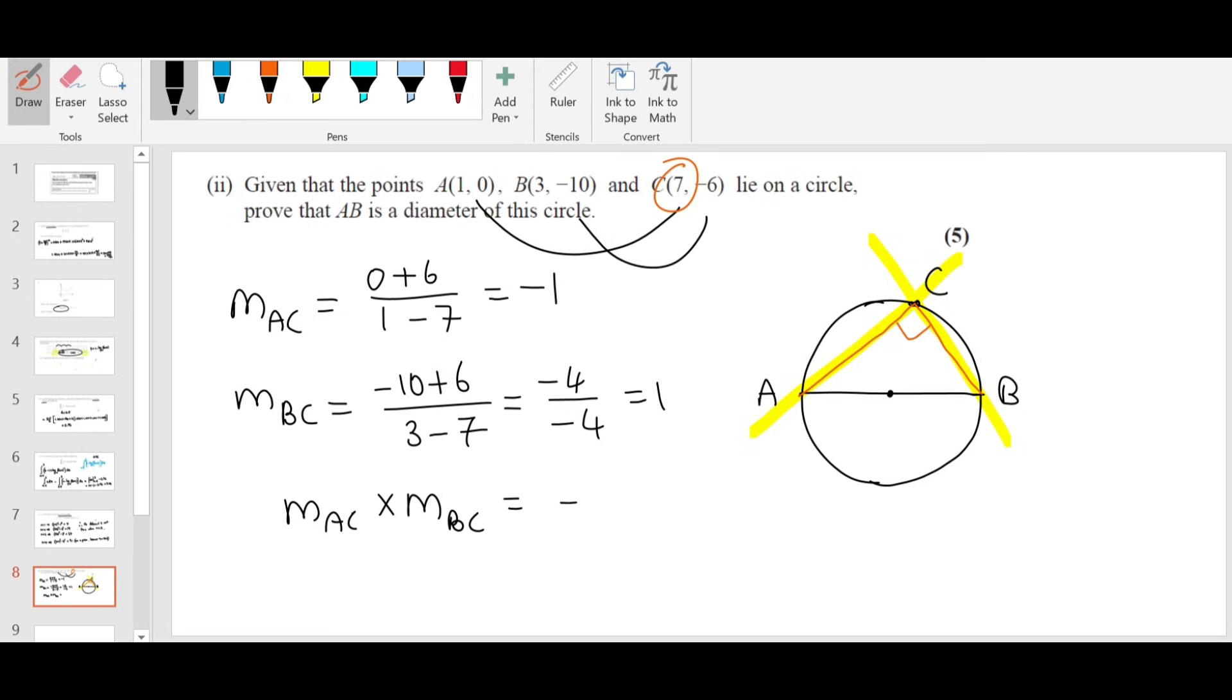So if you multiply the slopes, minus 1 times positive 1 is negative 1. When you multiply slope of two lines and you get a negative 1, that means they are perpendicular. Therefore, AC is perpendicular to BC. That implies ABC is a right-angle triangle. If it's a right-angle triangle, C is the common point. Therefore, as per the circle theorem, AB is the diameter. You need to write the conclusion.